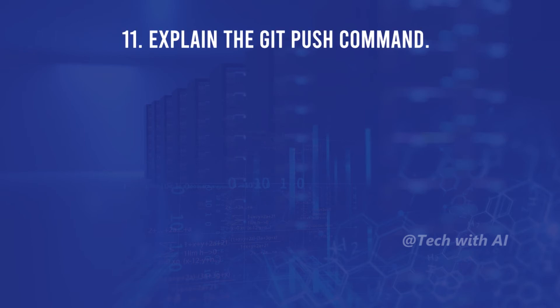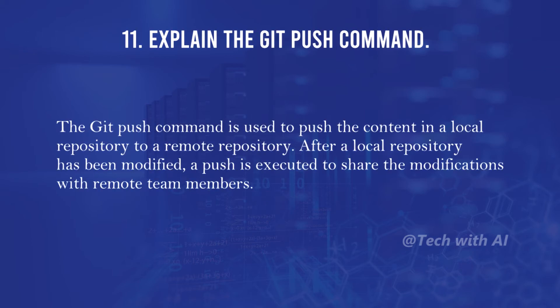Explain the git push command. The git push command is used to push the content in a local repository to a remote repository. After a local repository has been modified, a push is executed to share the modifications with remote team members.